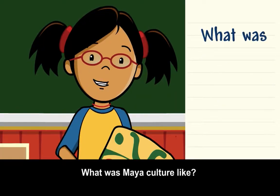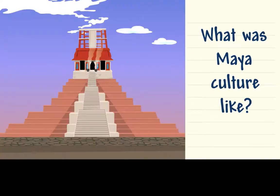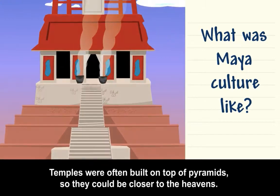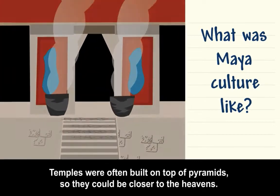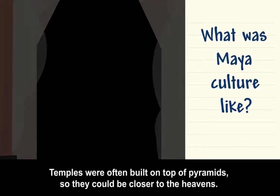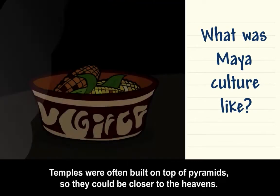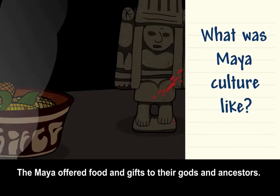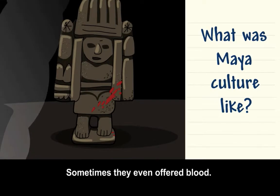What was Maya culture like? Religion was an important part of Maya civilization. Temples were often built on top of pyramids so they could be closer to the heavens. The Maya offered food and gifts to their gods and ancestors, and sometimes they even offered blood.